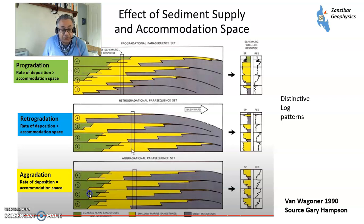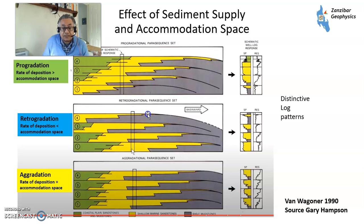You've got aggradation, where the rate of deposition is keeping up with the accommodation space — so everything is pretty much static. That's your beach sands, your terrigenous coastal plain, and your deeper sea sediment. Then you've got retrogradation, where the rate of deposition is less than the accommodation space — the sediment, beach, and deep sea are all moving landward, and the relative shoreline is moving to the left. And here you've got progradation, where the rate of deposition is greater than the accommodation space and sediment is coming in with everything moving basinward.